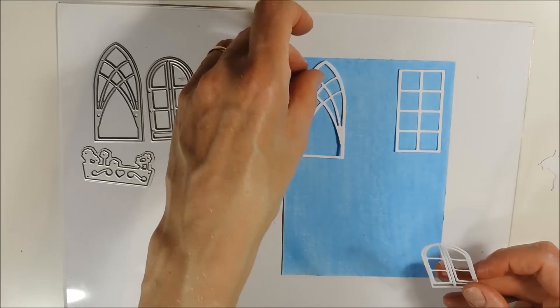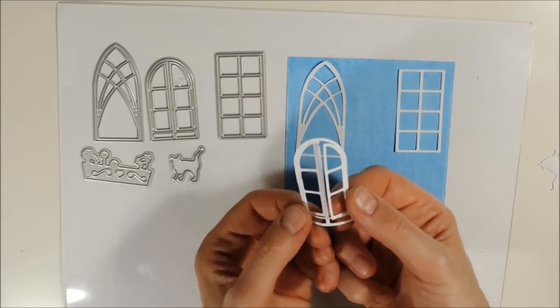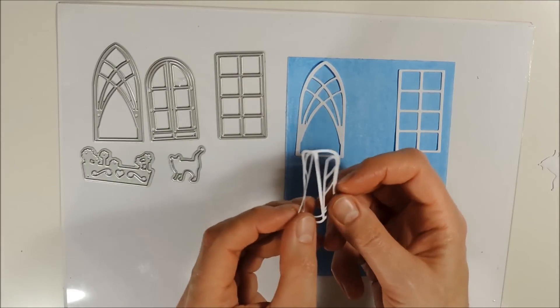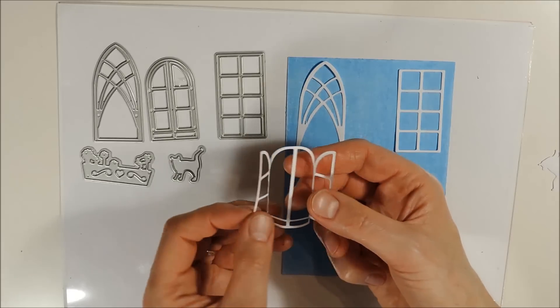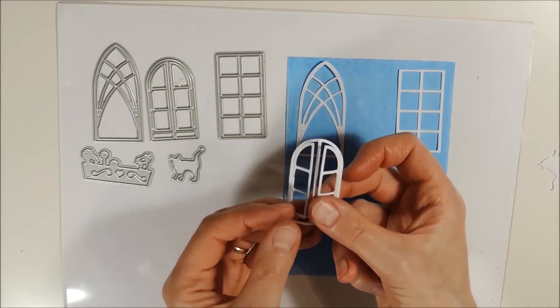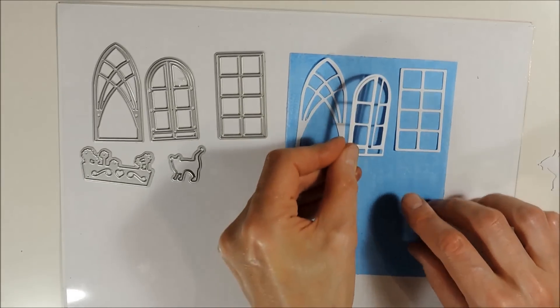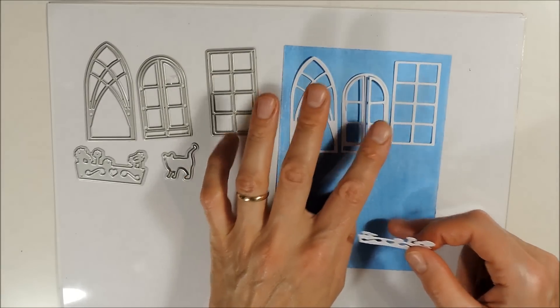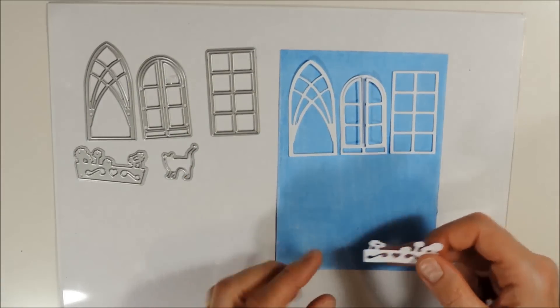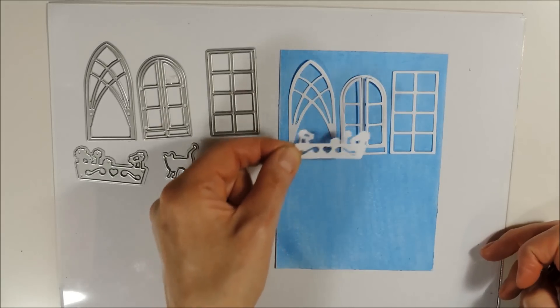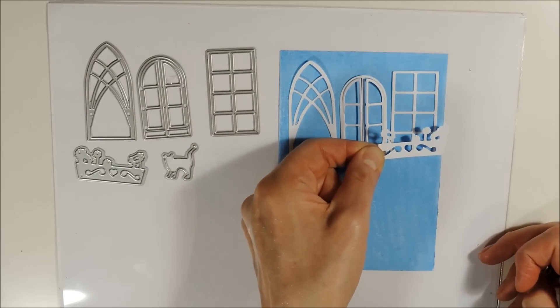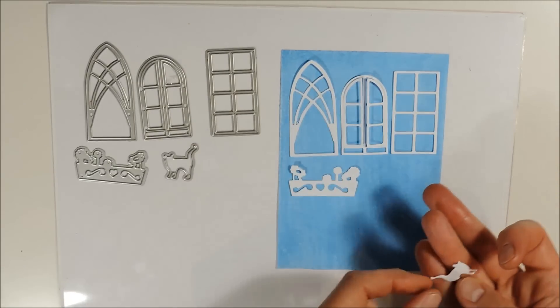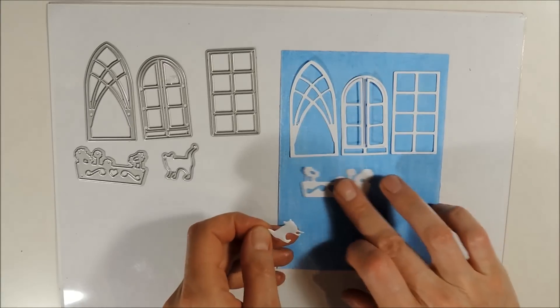This round window when you cut it out properly it will open up like this. And here is the little flower pot which could be added to a window like this maybe. And here is the little cat.